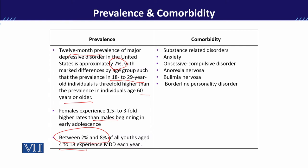Now we will look at comorbidity — the disorders that can occur alongside major depressive disorder. One example is substance-related disorder, which can affect both children and adults.